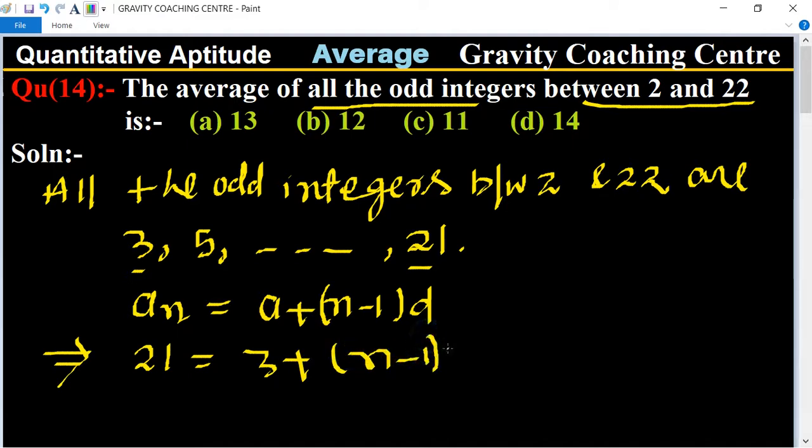difference d = 2. This implies that 21 - 3 = 2n - 2.